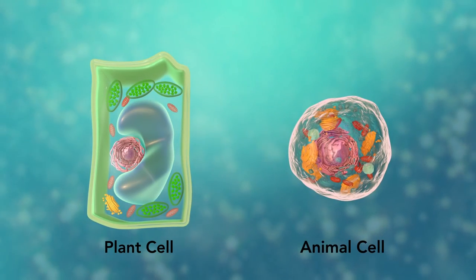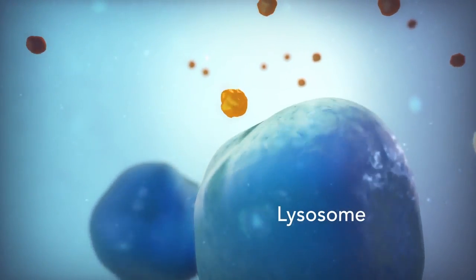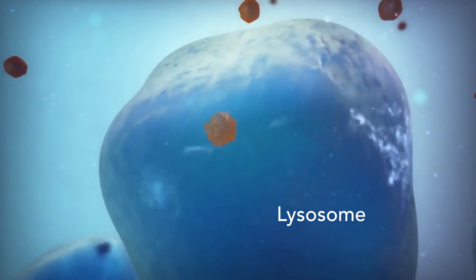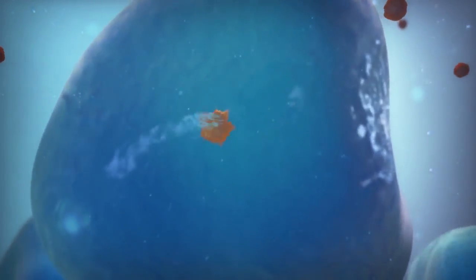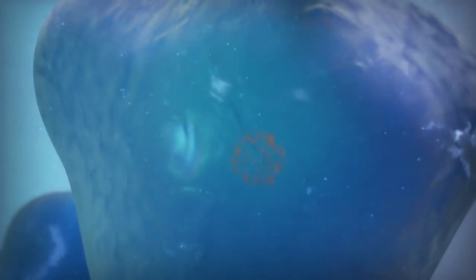Going back to the animal cell, you will see an organelle called a lysosome. Lysosomes are the garbage collectors that take in damaged or worn-out cell parts. They are filled with enzymes that break down this cellular debris.